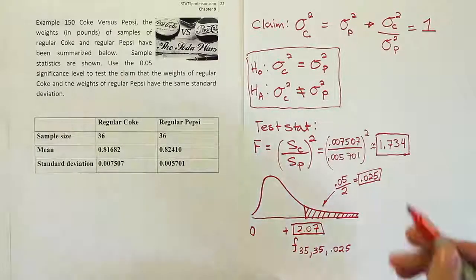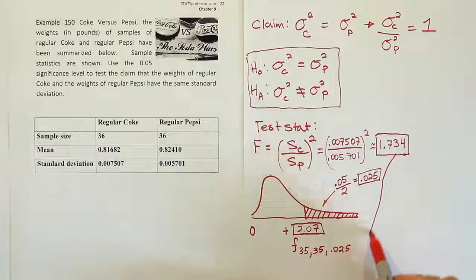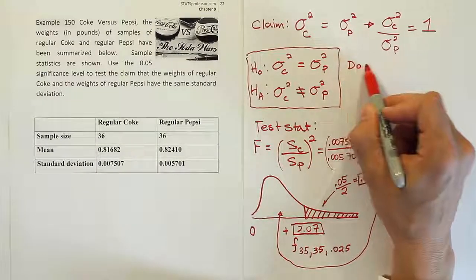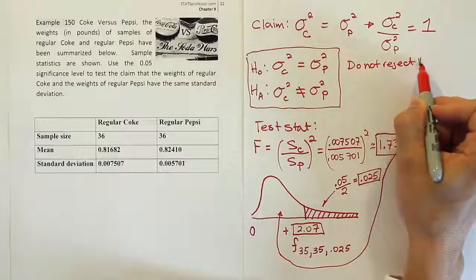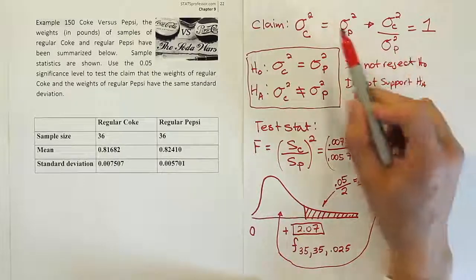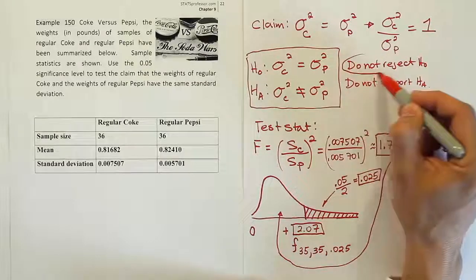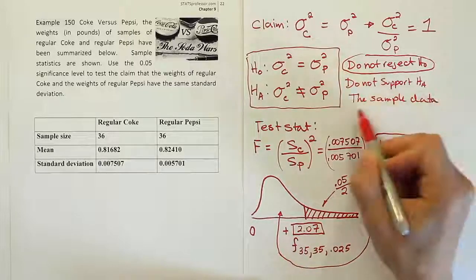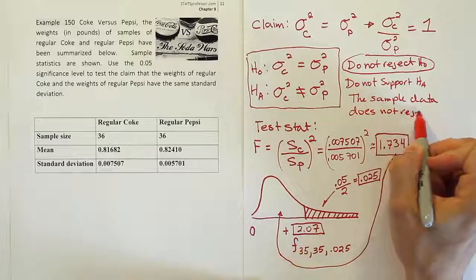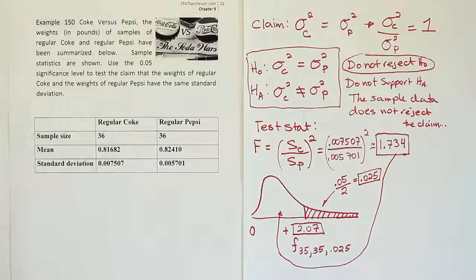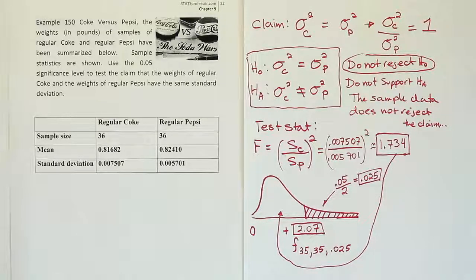Now we're going to compare our test stat to the critical value. And you can see that the test stat actually doesn't land inside the rejection region. It lands between 0 and 2.07. So we're going to conclude that we do not reject HO. So do not reject HO, or the null, and therefore do not support HA, the alternative. Now what's our claim? Our claim, if you look at it, is actually HO, so we're going to use this wording. We do not reject the claim. The sample data does not reject the claim. Okay, and what's that claim? The claim is that the two standard deviations are the same, or their two variances are the same. And so basically the machines that fill these Coke bottles and Pepsi bottles don't seem to have a statistically significant difference in variation. And that's it.